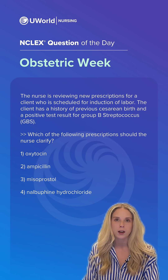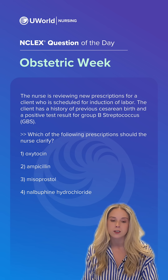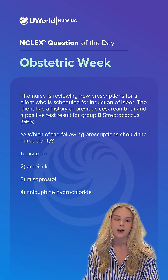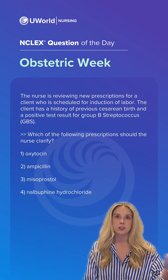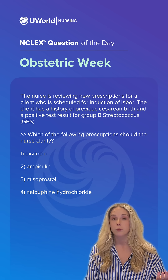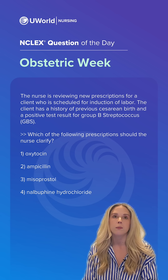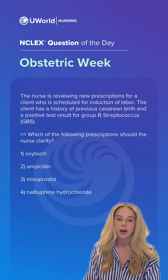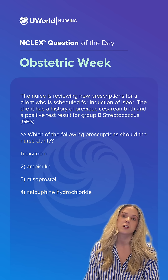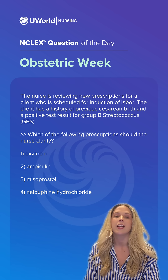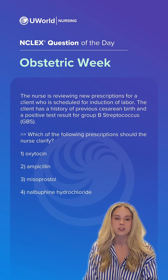Option one, oxytocin, would be okay. Option two, ampicillin, is an antibiotic that we often give for group B strep — we can even give it prophylactically. And lastly, nalbuphine hydrochloride, also known as Nubain, is an appropriate medication to manage pain and also helps control postpartum itching.